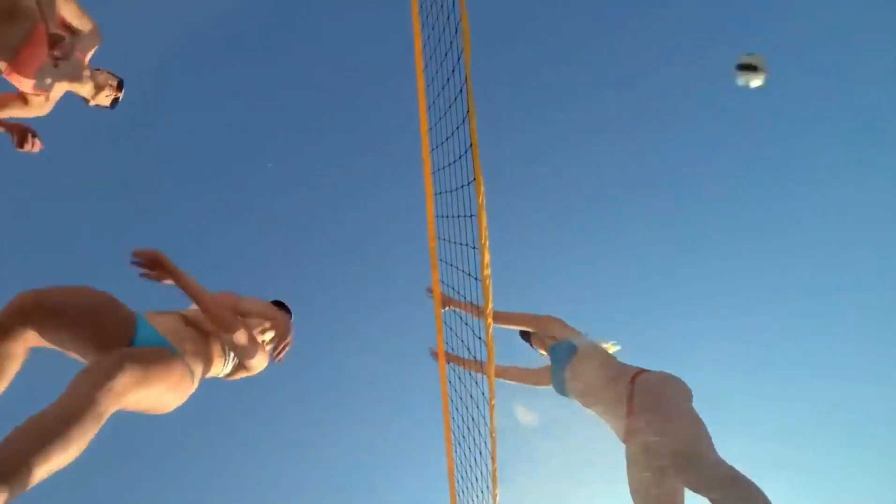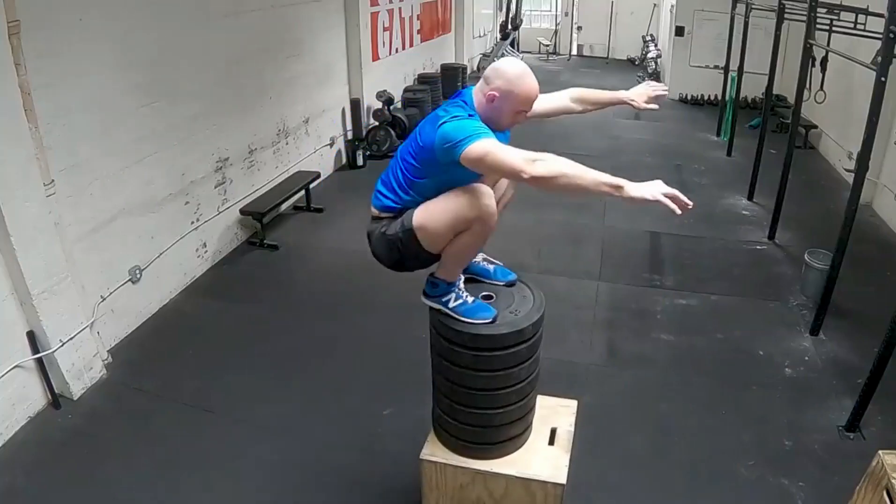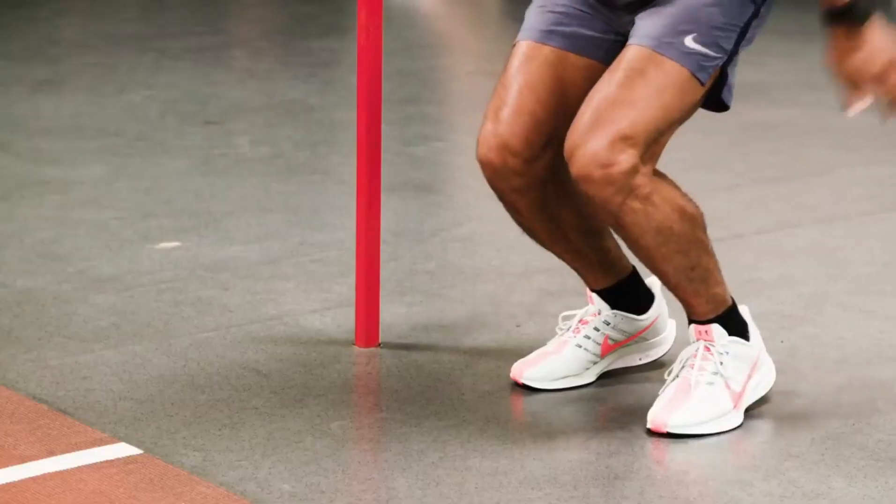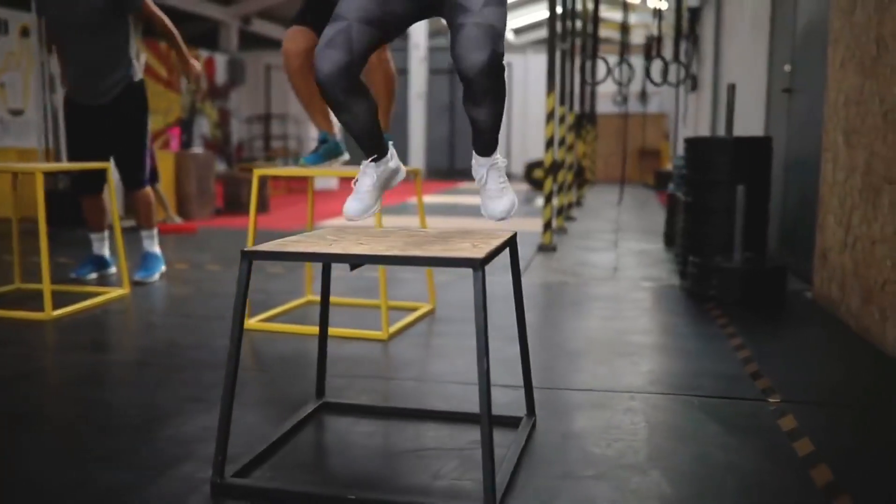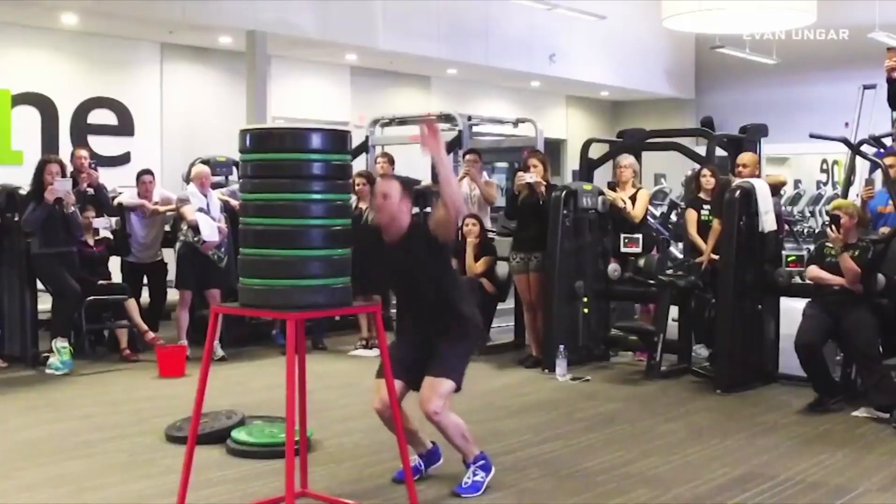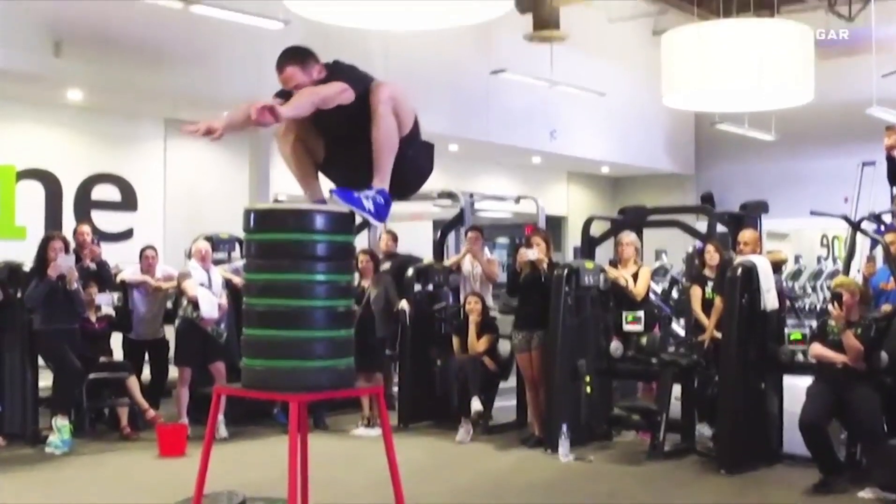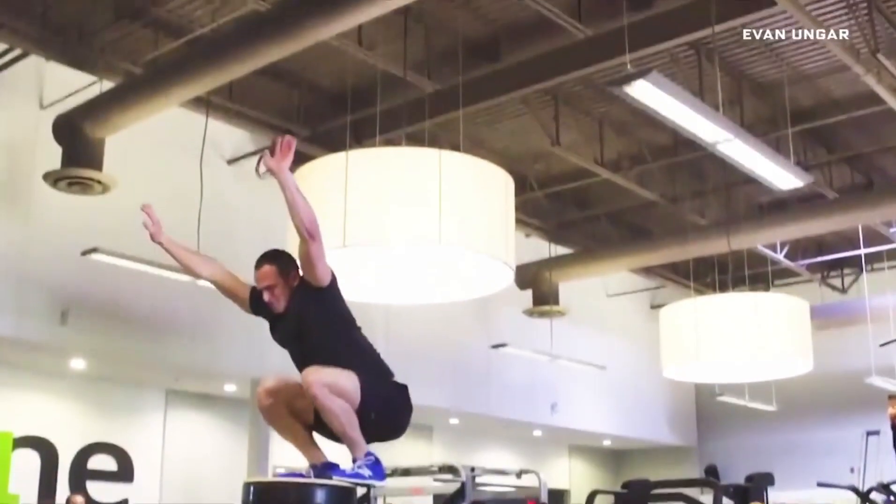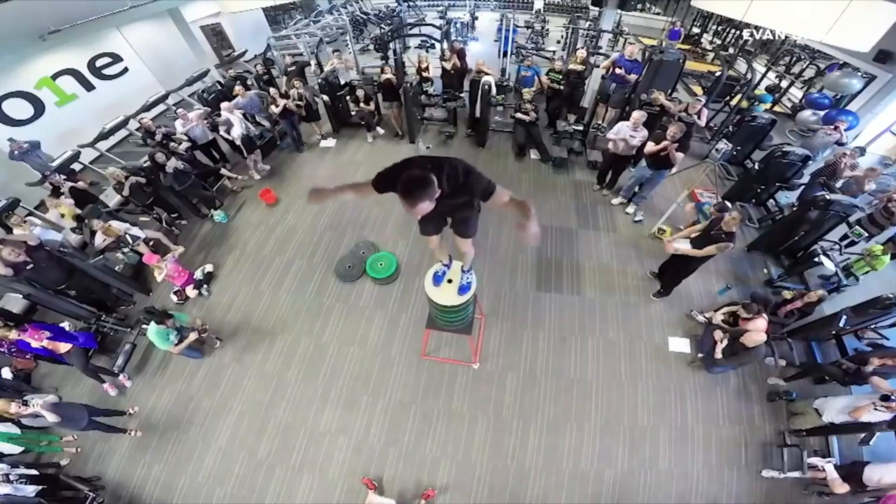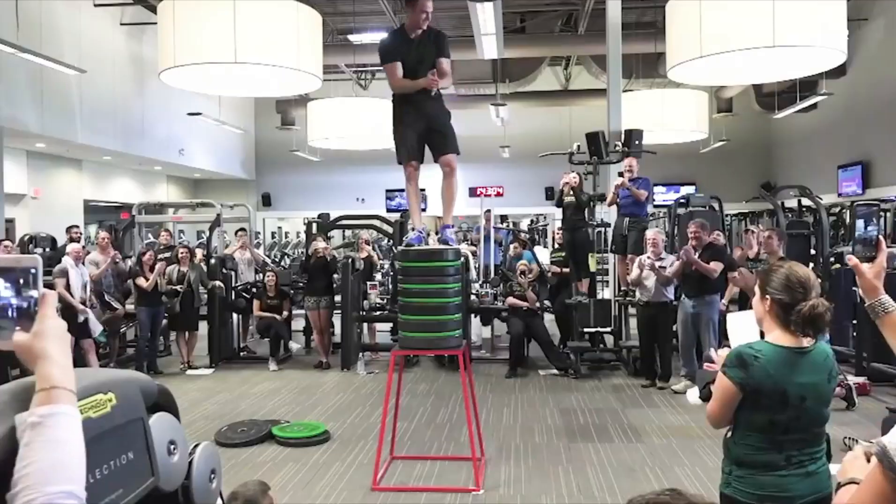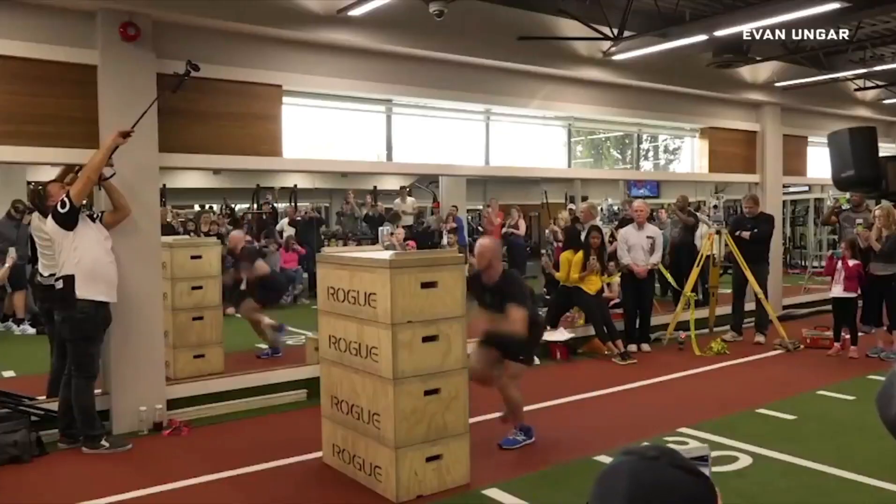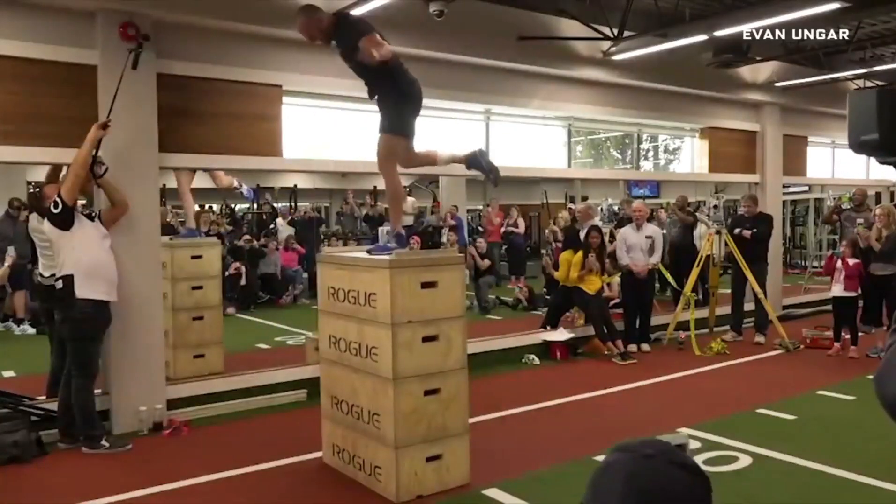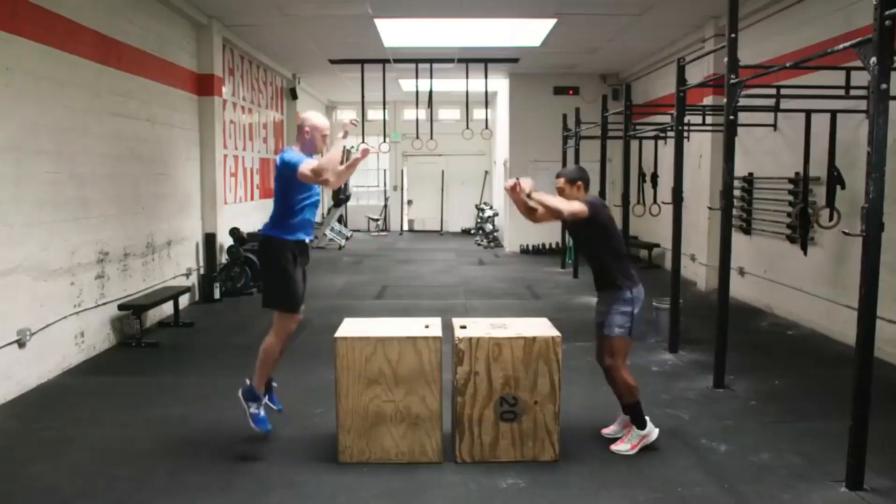Jumping high is an important skill for a lot of sports. Standing vertical jump is one of the critical tests at the NFL combine. The box jump, which has been made popular in part by CrossFit workouts, has gone viral on the internet. And it's easy to see why. This is Evan Unger, who set the Guinness World Record for a standing box jump at 63 and a half inches.